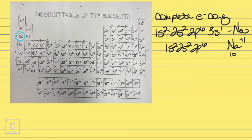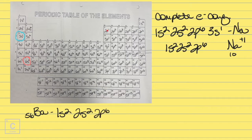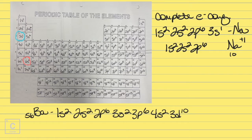Let's get another complete configuration — something a little bit longer, just so you can have practice. Let's look at barium. Barium is number 56 — we've got a lot to cover. We're going to let the periodic table guide us. First comes 1s, next comes 2s, after 2s comes 2p, after 2p comes 3s, after 3s comes 3p, after 3p comes 4s, after 4s we've got 3d. If you're wondering how I labeled this periodic table, I have a lesson on that, so make sure and check that link out.